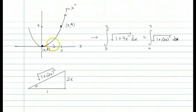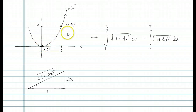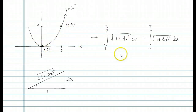In this case, I want to look at y equals x squared over the interval from 0 to 3, which connects these two points. It seems like a pretty simple problem, but it leads to this definite integral: the square root of 1 plus 4x squared.